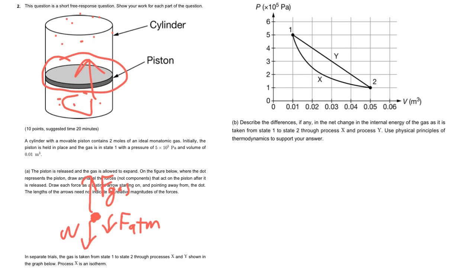In this one we have two processes, process X and Y. X is isothermal, so remember isothermal means constant temperature. Constant temperature means that U, the internal energy, is the same, is also constant.